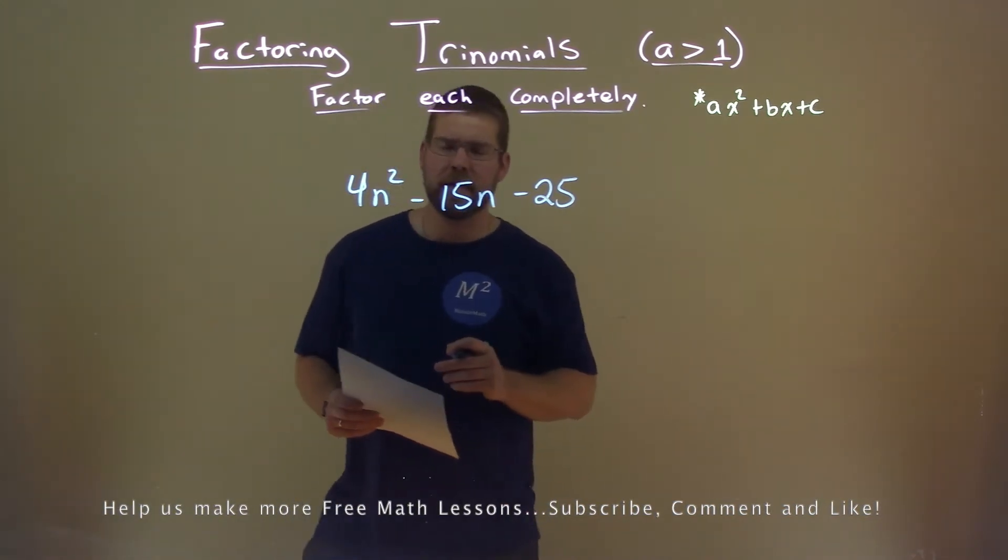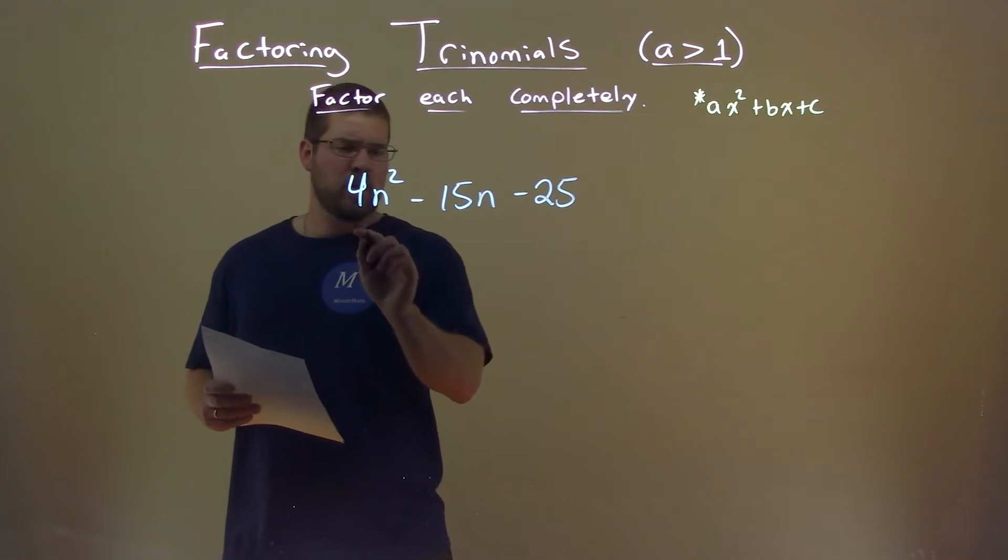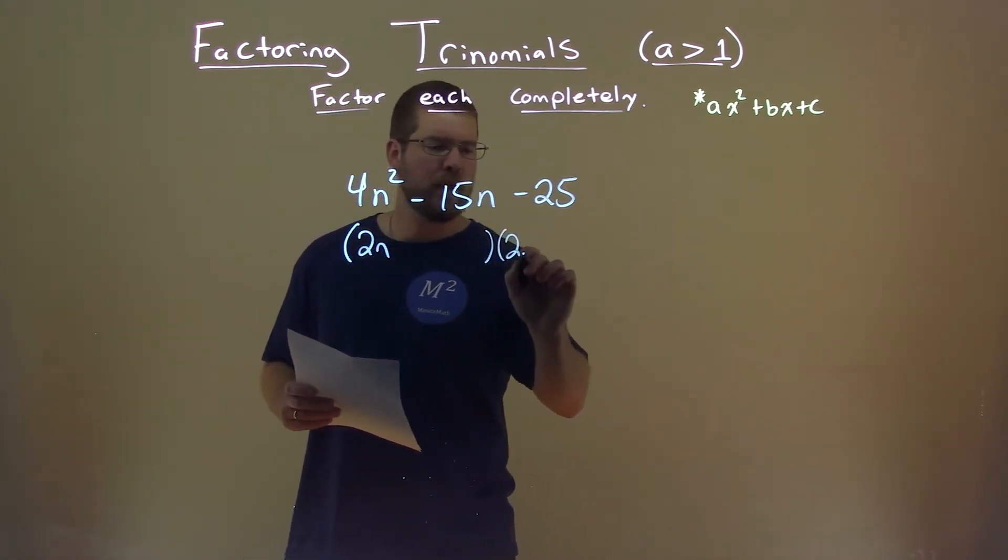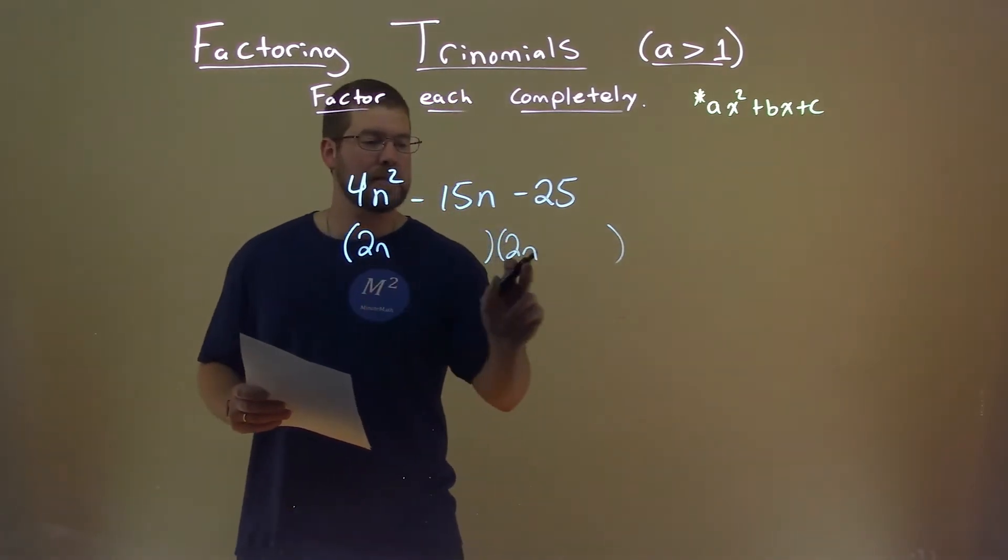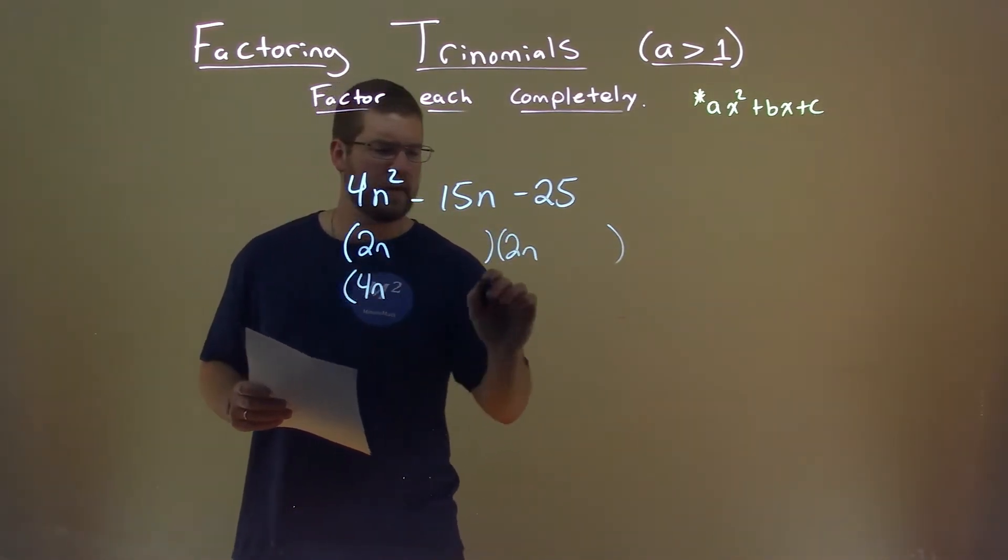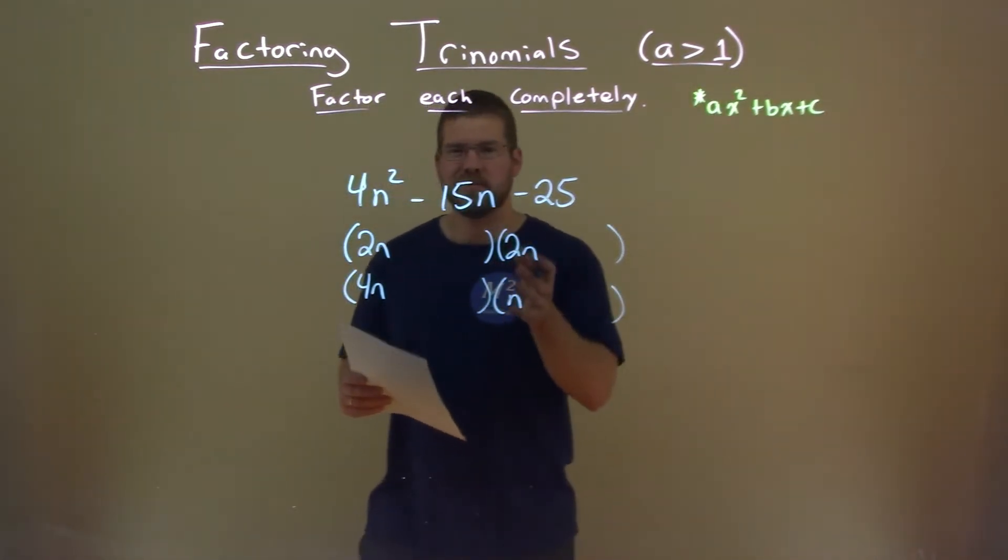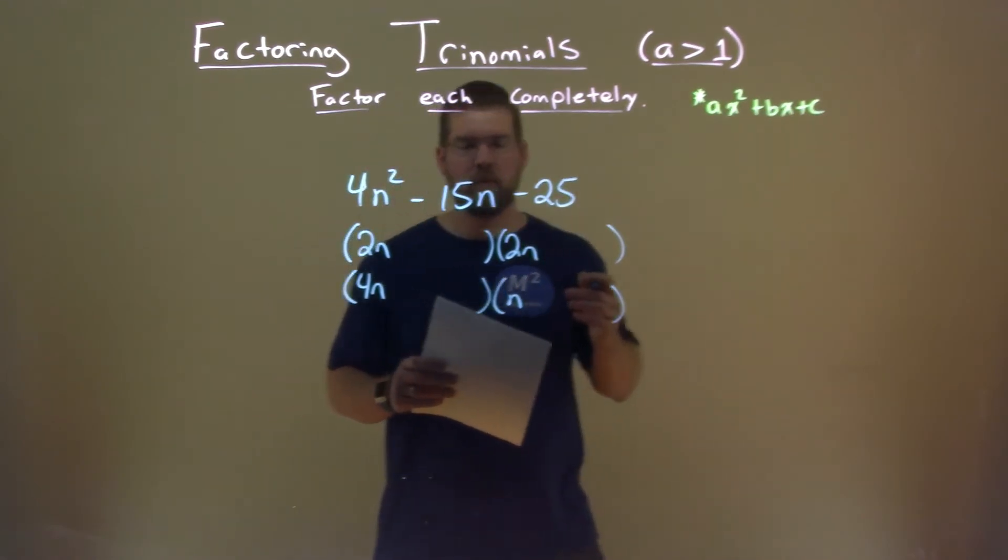Let's look at 4 right here, the a value. That lets us know that our form can either be 2n times 2n, because 2n times 2n gives us 4n squared, or we can have this as 4n times 1n. We're going to keep these two base forms in our mind as we move forward.